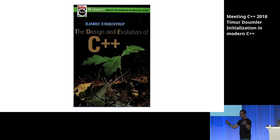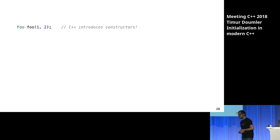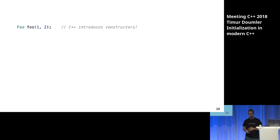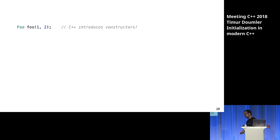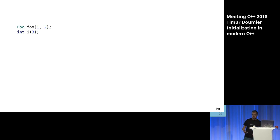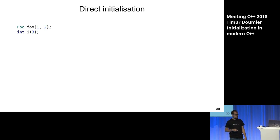Next step: C++ is born. The one big feature C++ introduces is constructors. You need a way to call them, and they can take more than one argument, so the previous syntaxes don't really work. When Bjarne created C++, he introduced a syntax with parentheses where you write the constructor arguments. For consistency, you can also use the same syntax with built-in types. You can initialize an int by giving it the initial value in parens. This is called direct initialization — the fourth kind of initialization we get from C++.